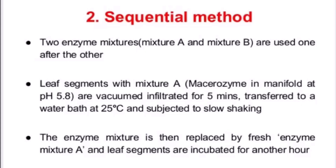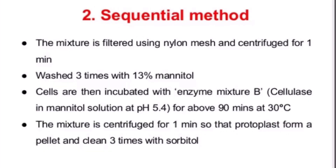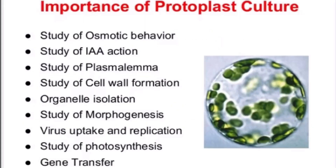The sequential or two-step method involves the use of two enzyme mixtures, such as pectinase and cellulase (or macrocellulase). One enzyme can be a micro-enzyme and the other pectinase or cellulase. The protoplasm is released, the middle lamella gets degraded, and separation of cells takes place, yielding separated cells with the cell wall properly removed by cellulase.